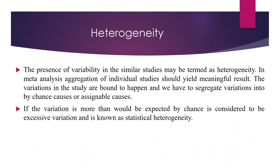Now what's the whole concept of heterogeneity? Let's try to understand. When research is carried out by different researchers on the same topic, it is bound to happen that there is some variation among the research. The presence of variability in similar studies may be termed as heterogeneity. In meta-analysis, aggregation of individual studies should yield a meaningful result. So our objective is to do the aggregation to come to a common consensus. The variations are classified into two groups: chance causes or assignable causes. It is next to impossible that variation does not happen among researchers, but if it is within statistical limits, we call it a chance cause. If it is beyond statistical limits, we say it is assignable causes and it is statistical heterogeneity.